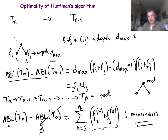This shows that the average bit length of the tree constructed by Huffman's algorithm has the minimum average bit length. In other words, it is the optimal encoding tree.